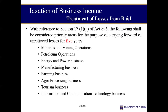When you make a loss, that loss may be allowed to be carried over for a period of five years if you are within the priority sector. If you are not within the priority sector, you can only carry over the loss for a maximum of three years. The priority sectors are mining, petroleum, energy and power, manufacturing, farming, agro processing, tourism, and ICT. If you are operating within any of these industries, you'll be allowed to carry over your loss for a maximum of five years. If you are not, then you can do a maximum of three years.